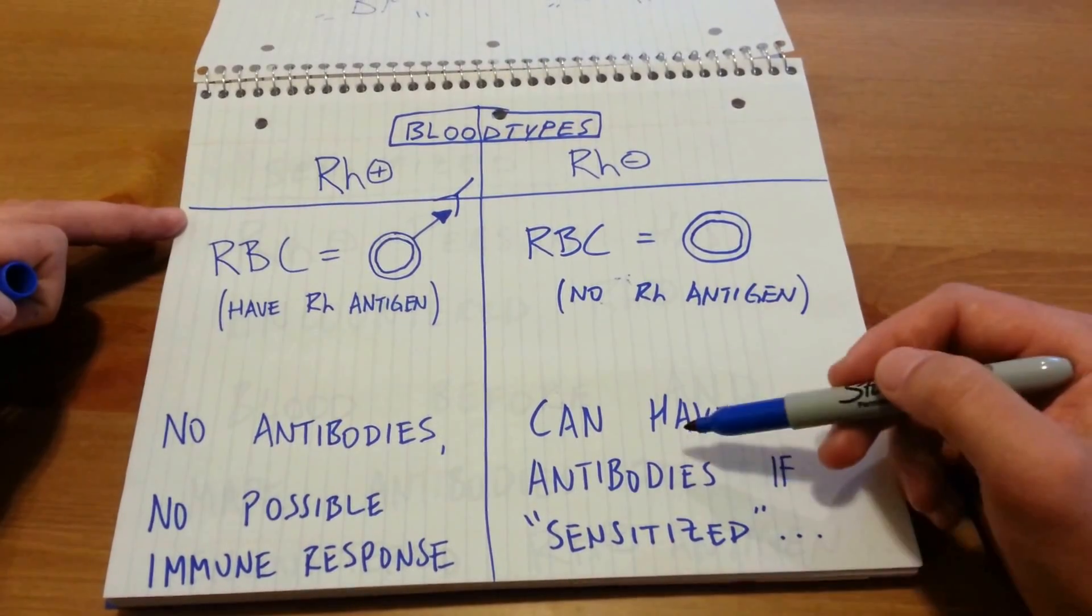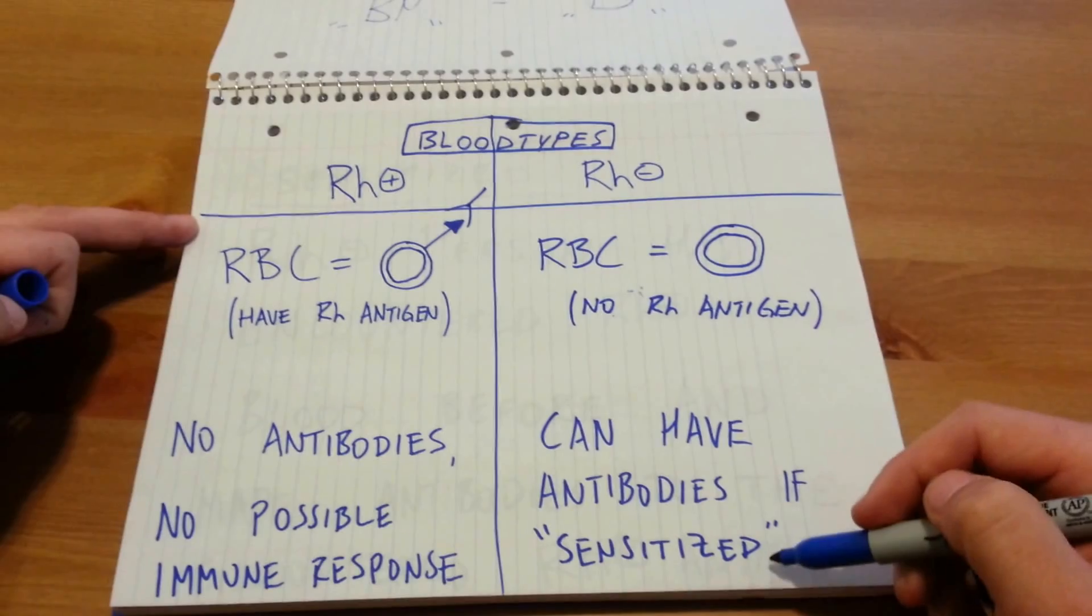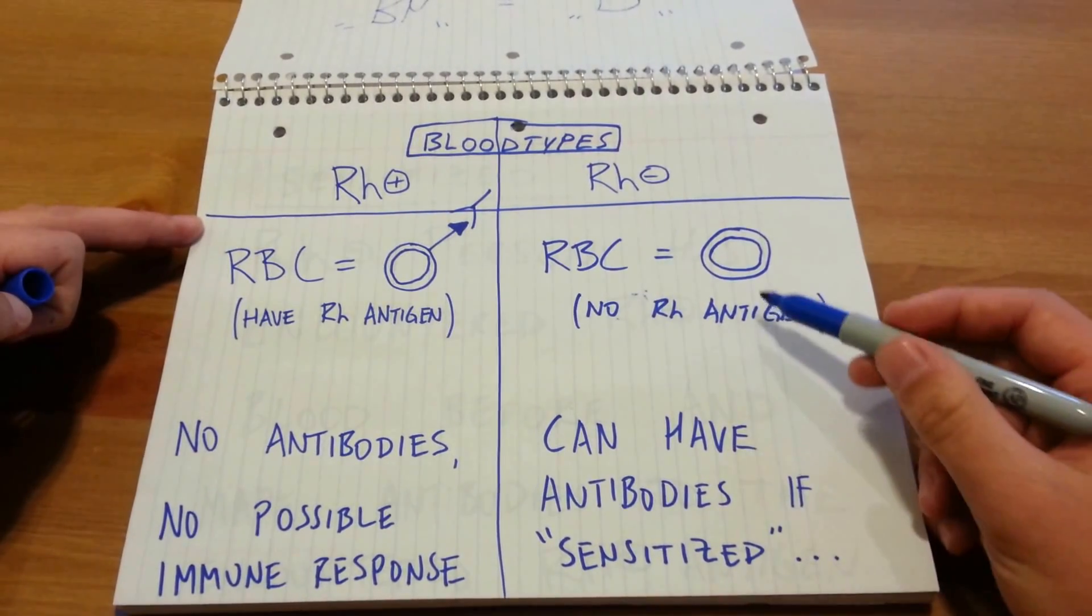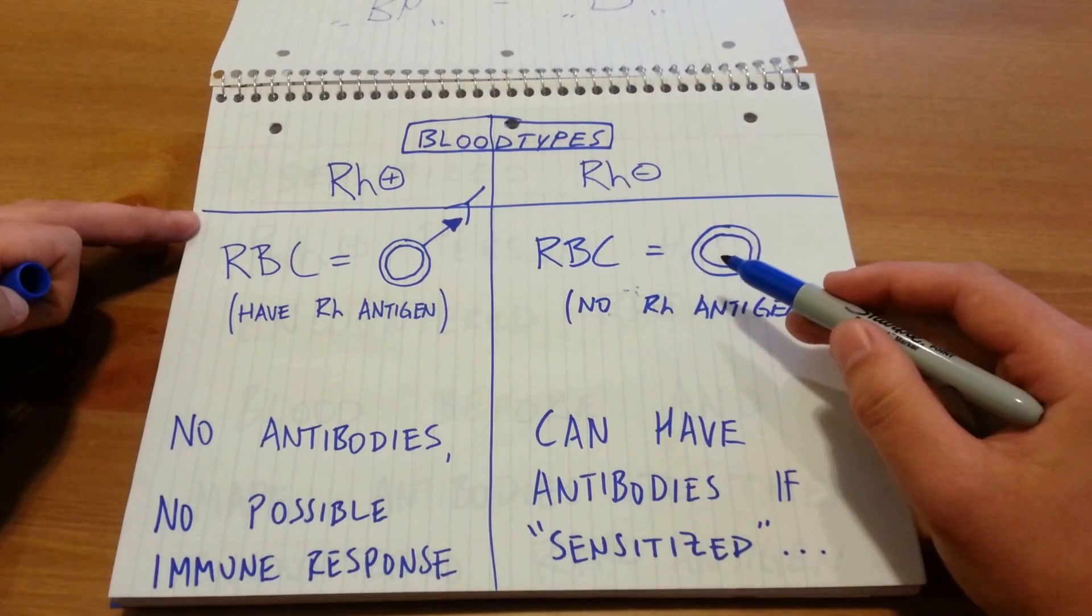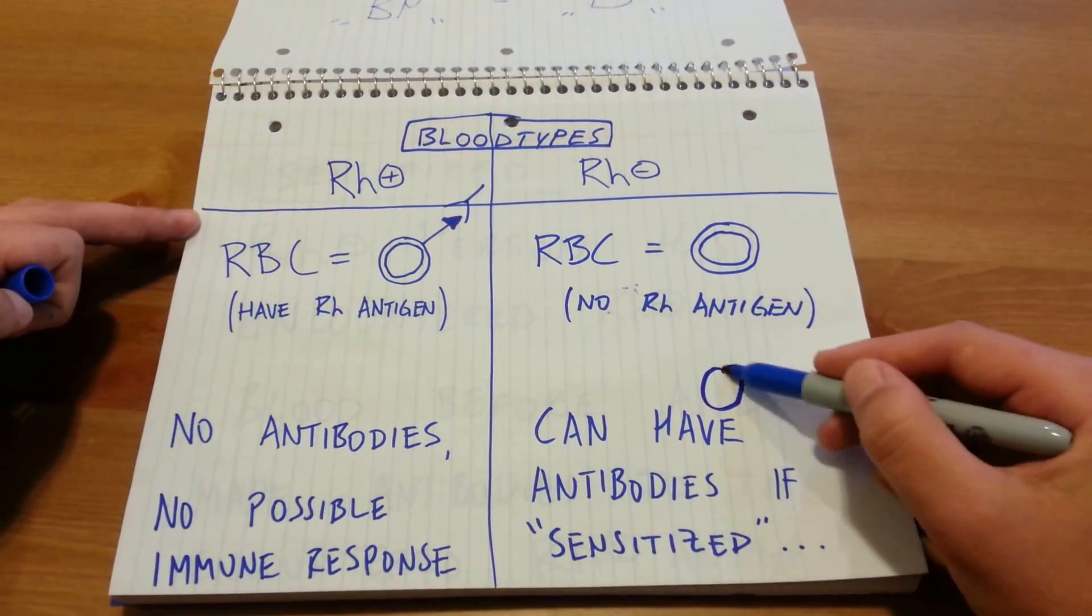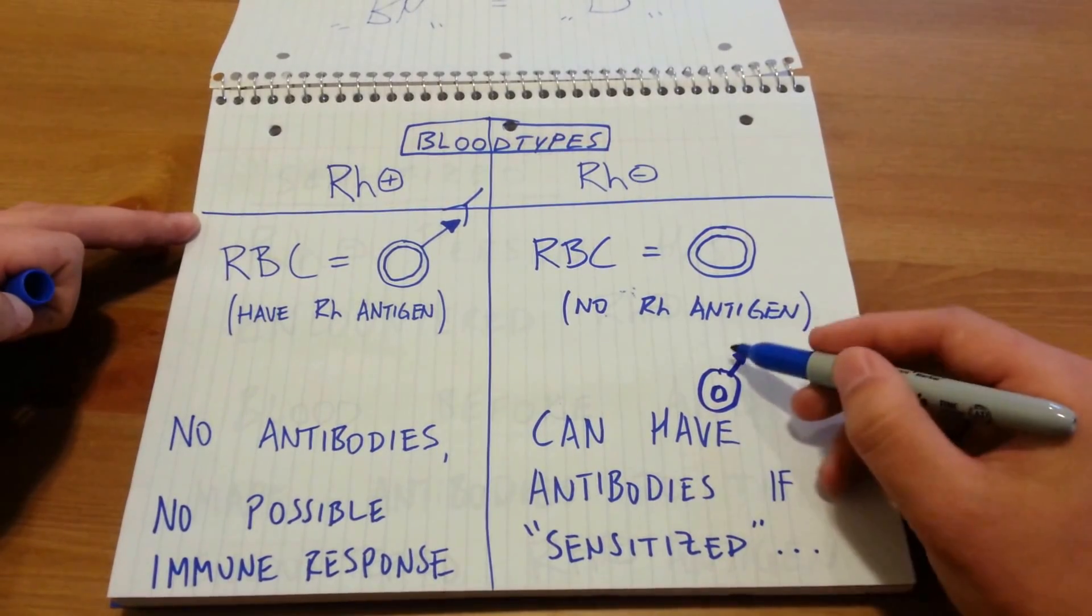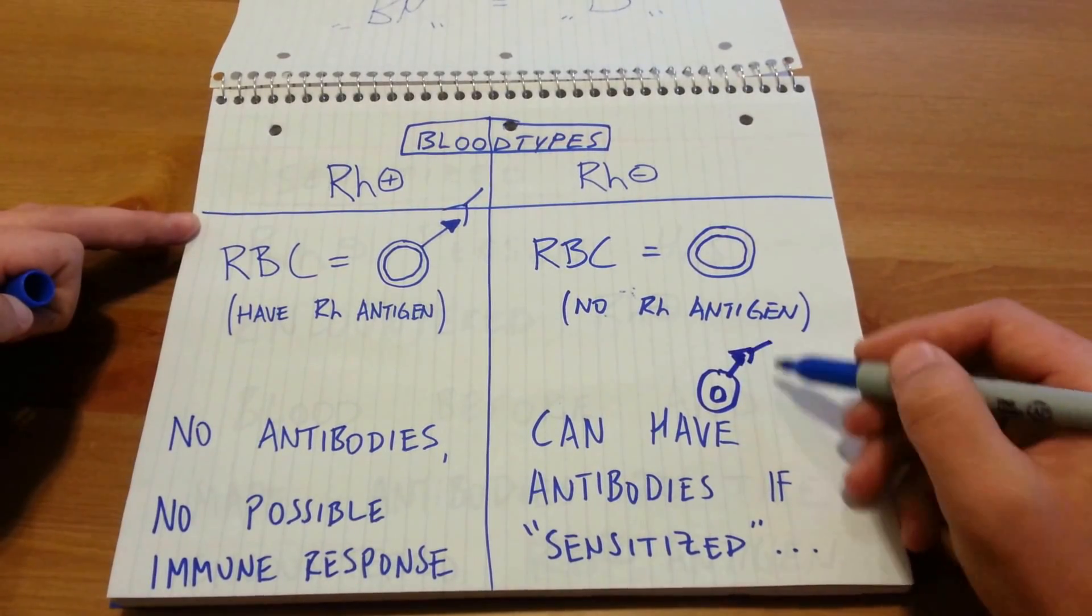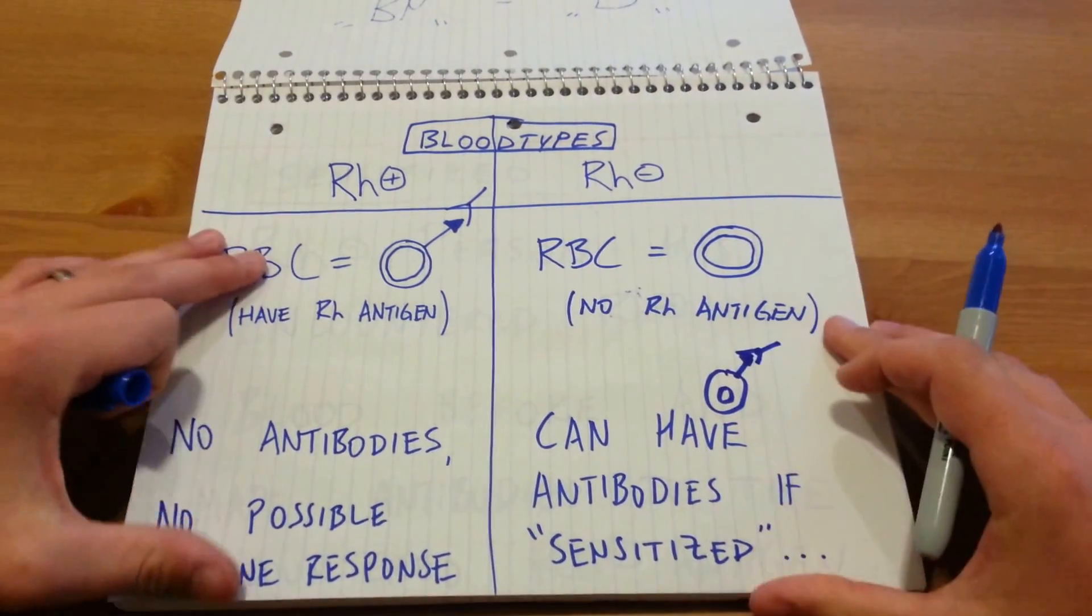With RH negative individuals, they can have antibodies if they're sensitized. And we'll talk about what sensitization means here in a second. But the unsensitized RH negative person is going to have no antibodies. But if they encounter an RH positive blood or antigen, they then can make antibodies because their bloodstream will recognize it as foreign because their normal blood does not have the antigen.